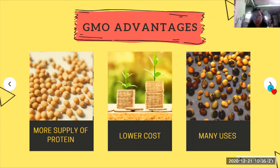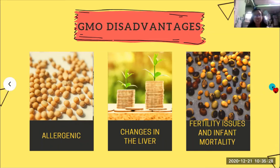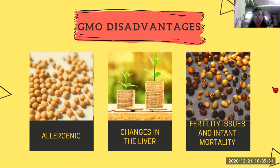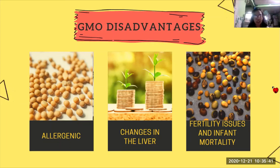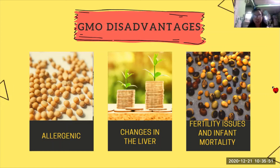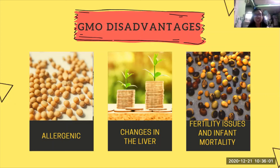For the disadvantages of GMO soybean: for some people, it is allergenic. Soybean may cause changes in the liver of a human, and eating this soybean may cause fertility issues and infant mortality for pregnant women. So, we have discussed the GMO process, advantages, and disadvantages of genetically modified organisms, which is the soybean. Thank you for listening and have a nice day ahead.